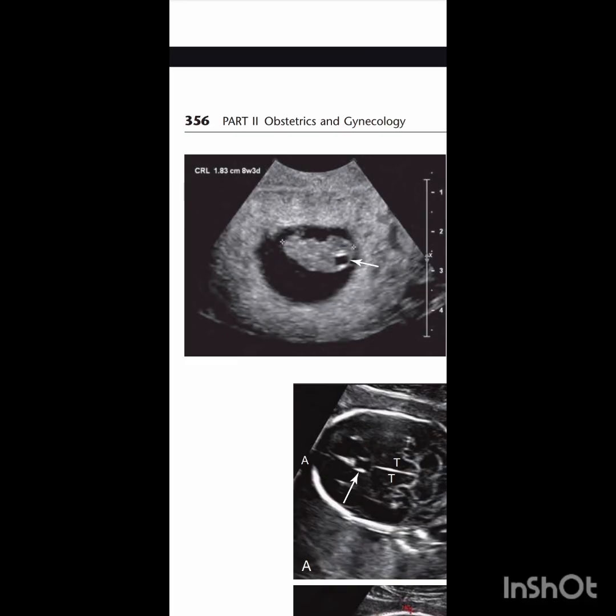In this image we have an embryo at 8 weeks 3 days, showing a cystic structure in the posterior portion of the head during the embryological development of the rhombencephalon. This is a normal finding and it should not be reported.